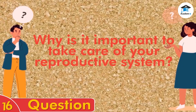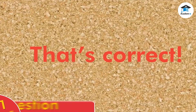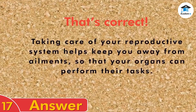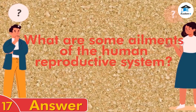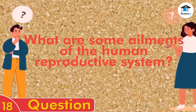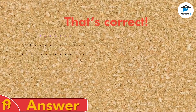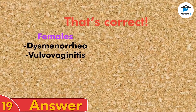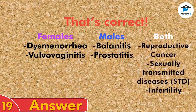Why is it important to take care of your reproductive system? Taking care of your reproductive system helps keep you away from ailments so that your organs can perform their tasks. What are some ailments of the human reproductive system? Dysmenorrhea and vulvovaginitis for females; balanitis and prostatitis for males; and reproductive cancer, sexually transmitted diseases, and infertility for both males and females.